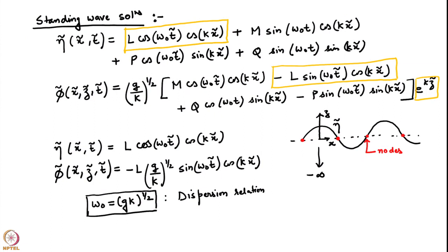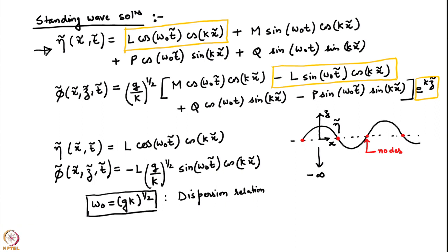We were looking at linearized surface gravity waves in deep water. We found the pressure field corresponding to a deep water surface gravity wave and found that it decays exponentially with respect to depth. The perturbation pressure field decays exponentially. Let us look at the structure of the solutions found so far. We had 4 constants of integration L, M, P, Q, and these constants also appeared in the expressions for phi and the perturbation pressure P. Everything is written in dimensional variables here.